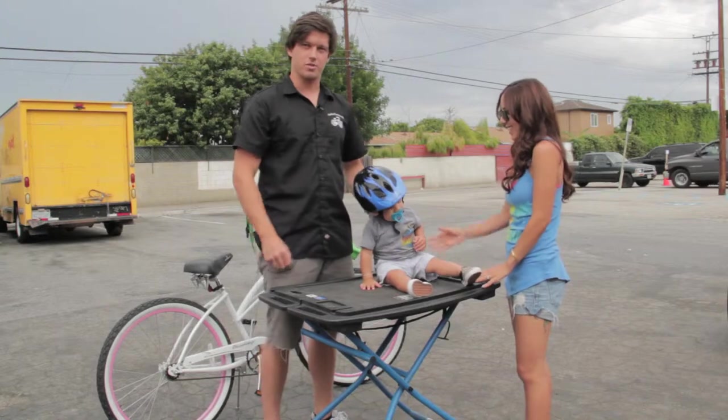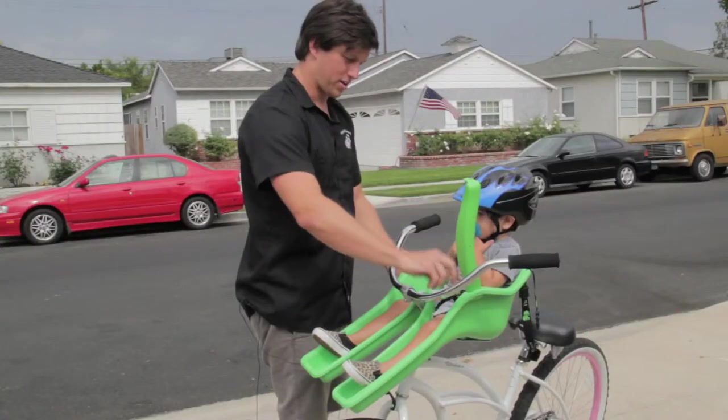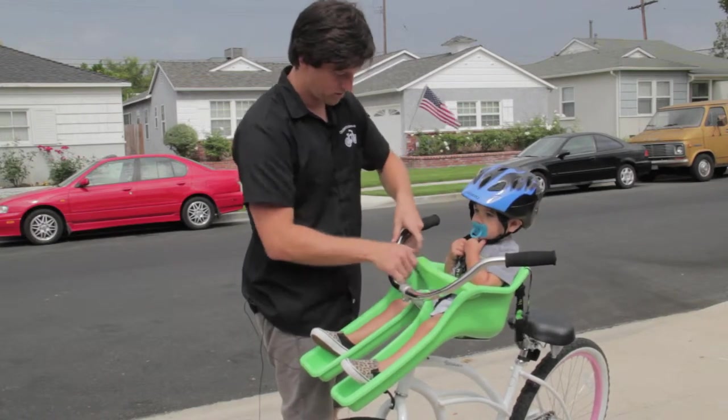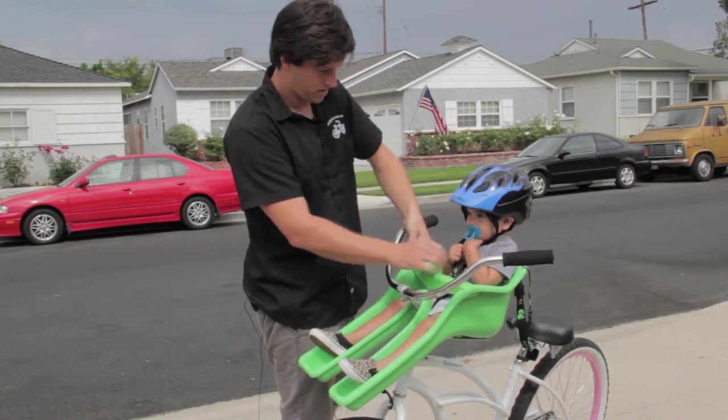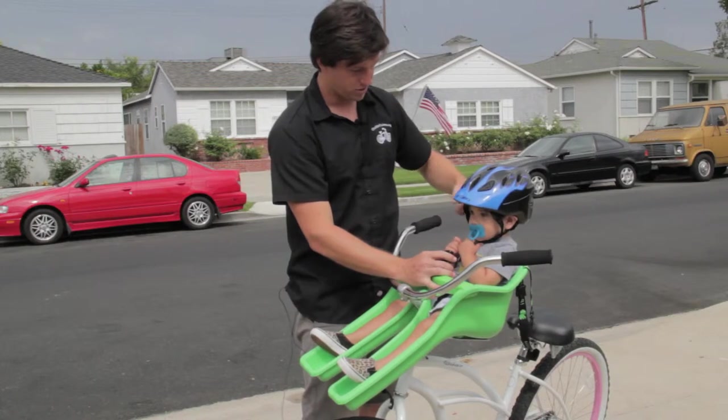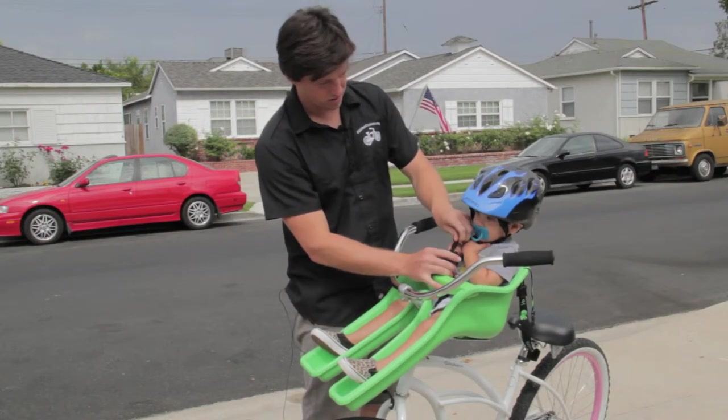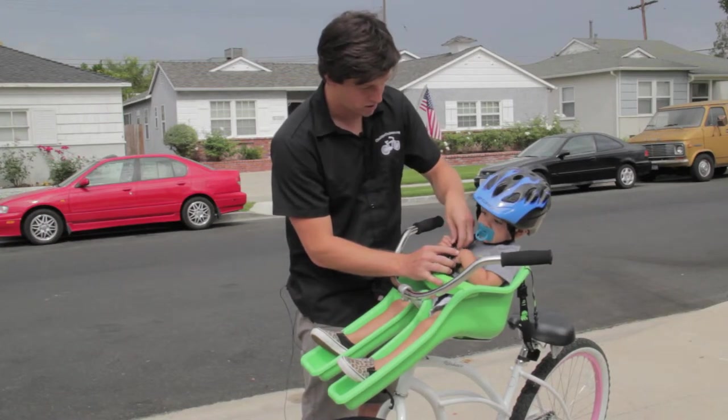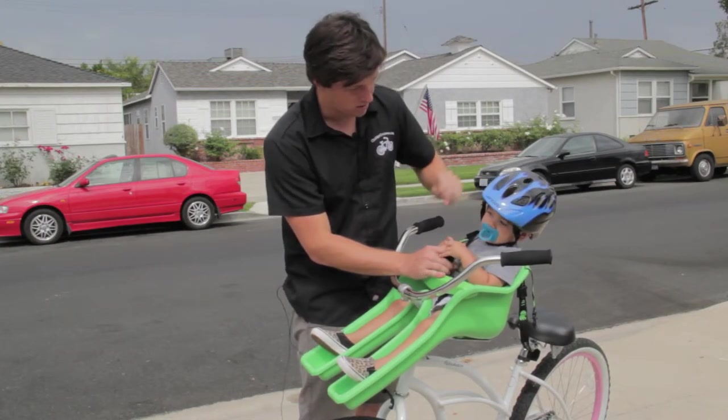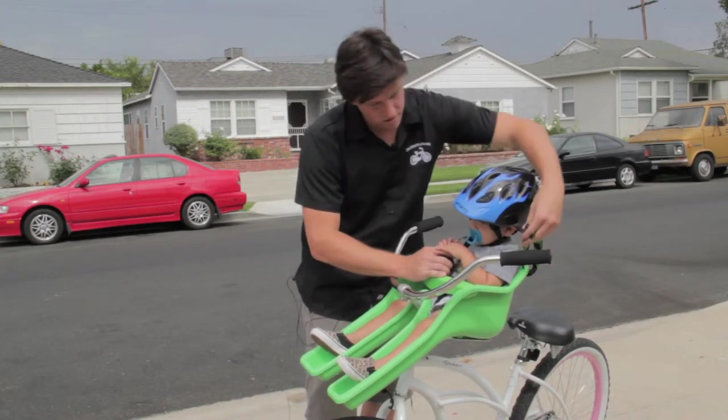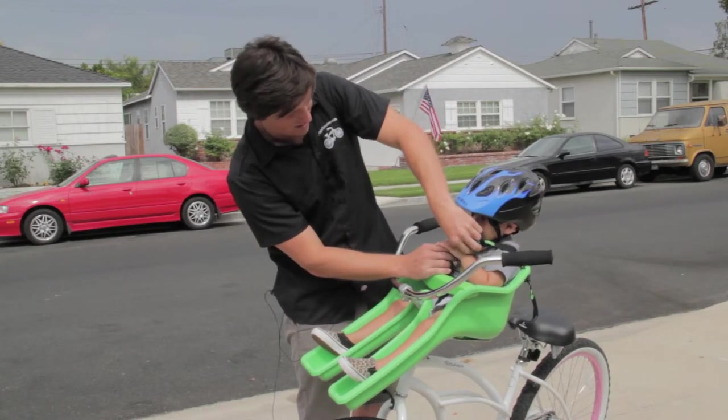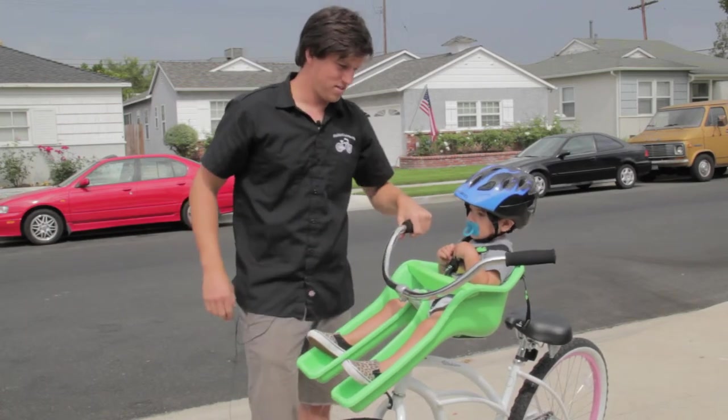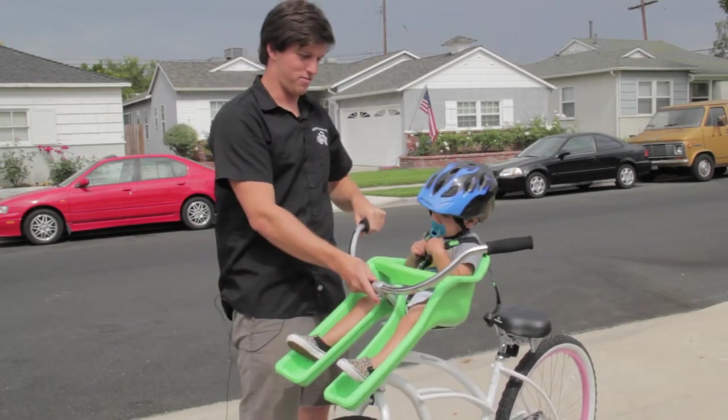Now we're ready to put Theodore in the child seat. So to get Theodore in, we're just going to get the straps in position. Close the bar. And then adjust the straps over each shoulder. One clip. Excuse me little buddy. There you go. And then the other clip. Good job. And then he's in and ready to ride.